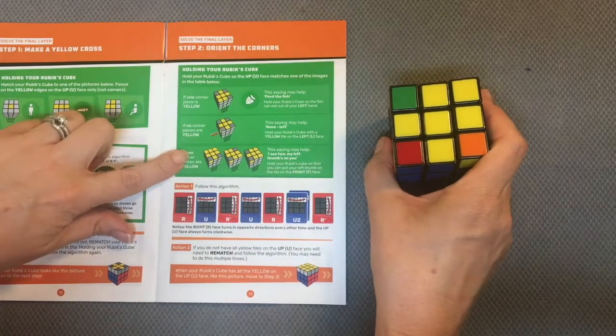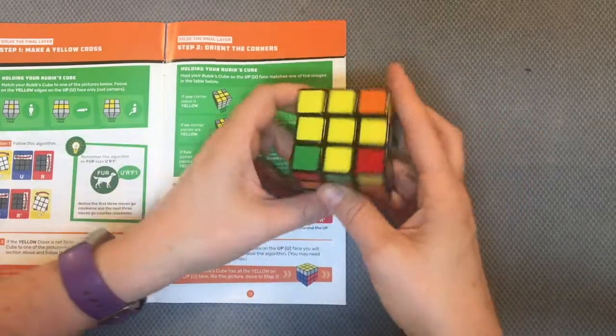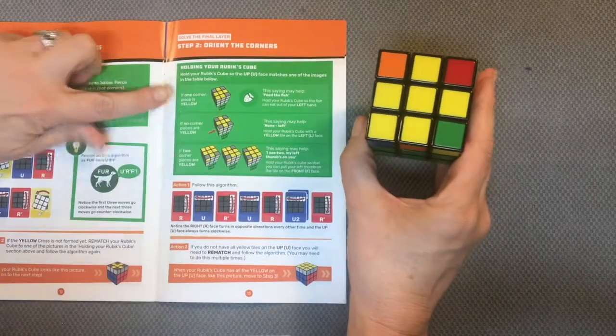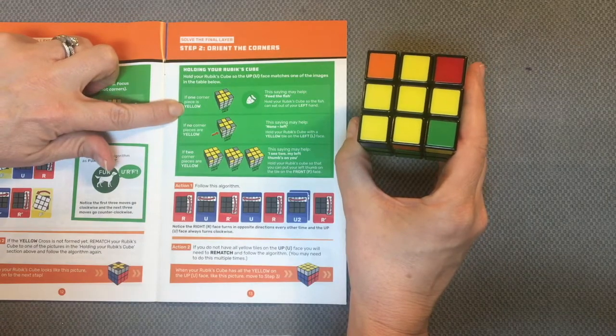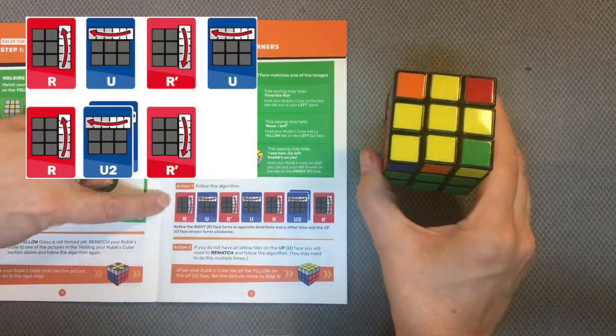And here's another time I need to do some pattern matching. So once again, it looks like this same top one. One corner piece is yellow. Now I run this algorithm.